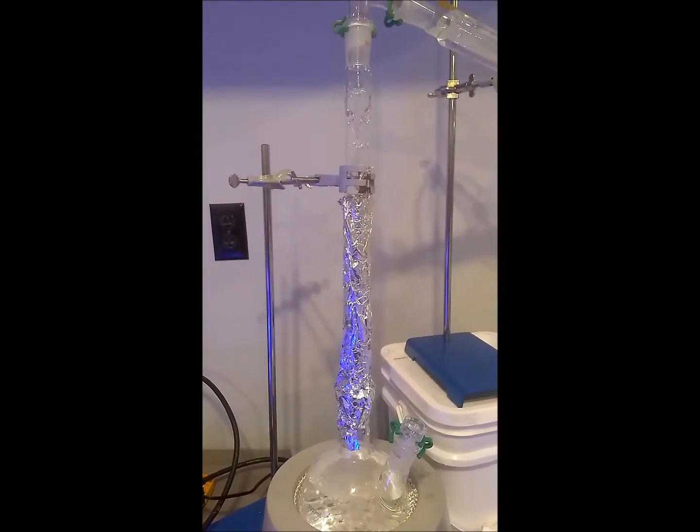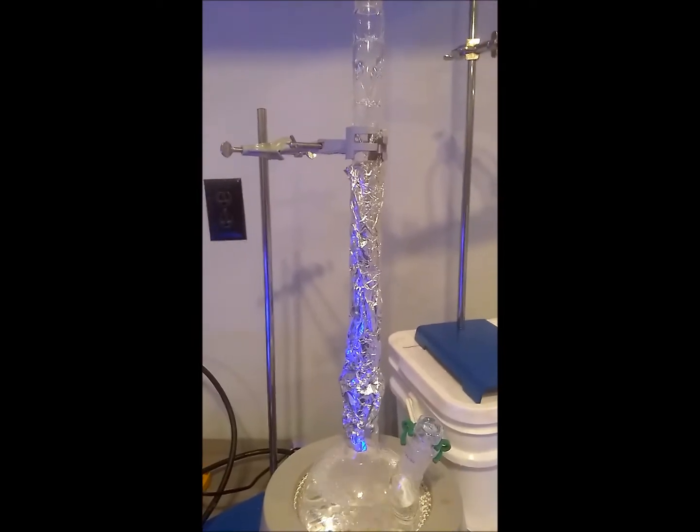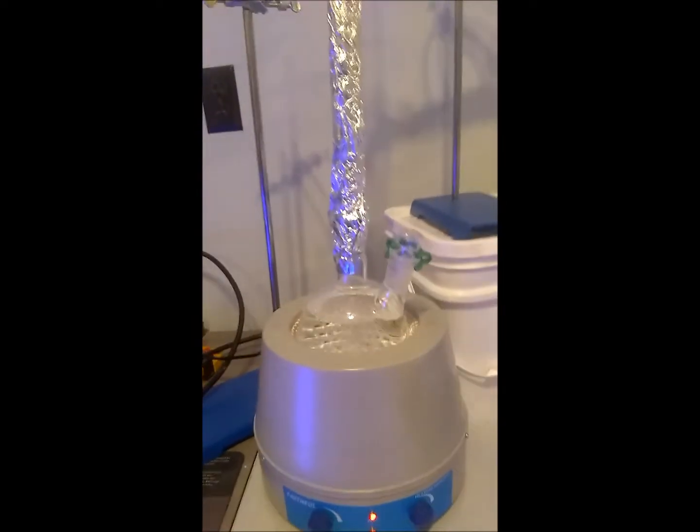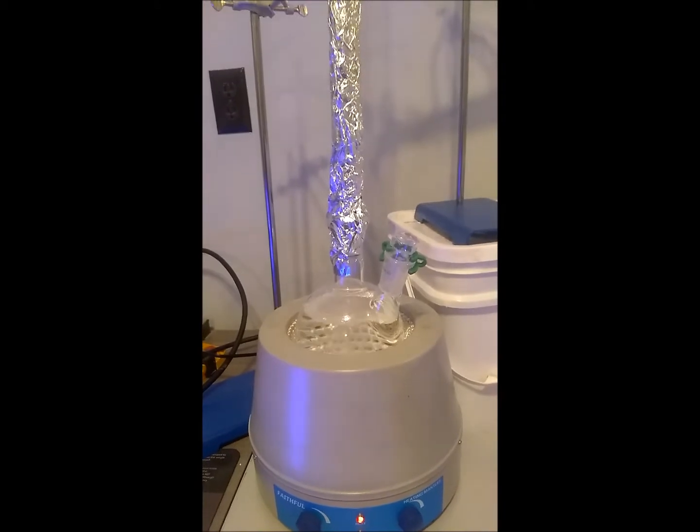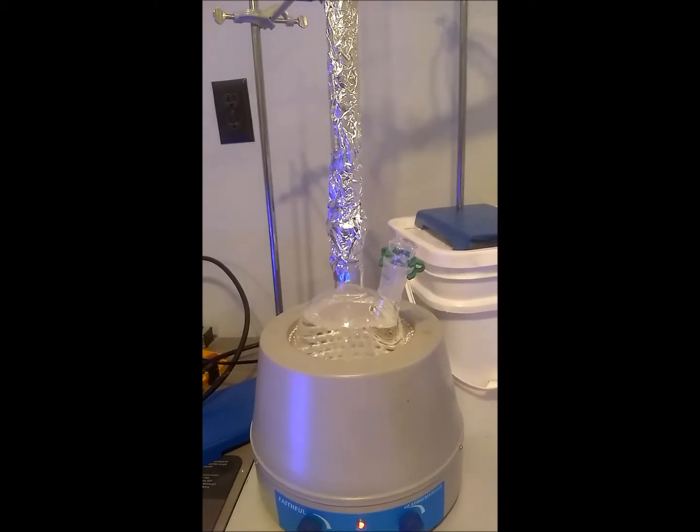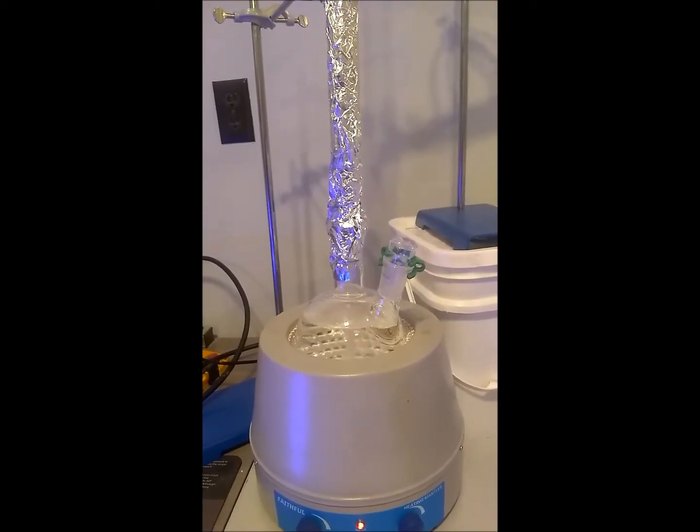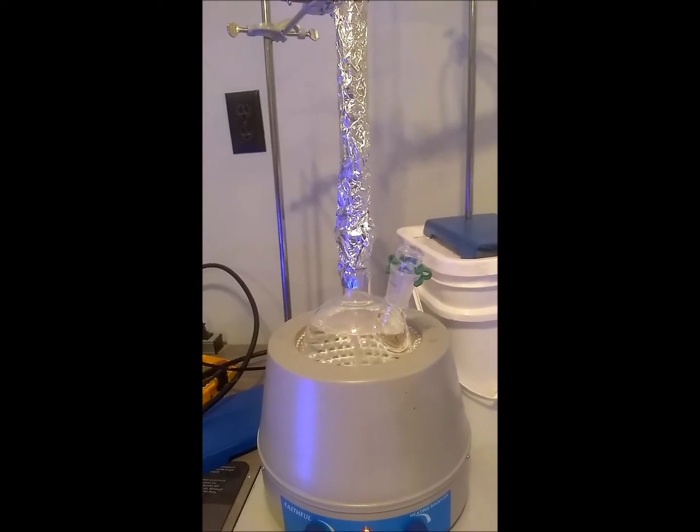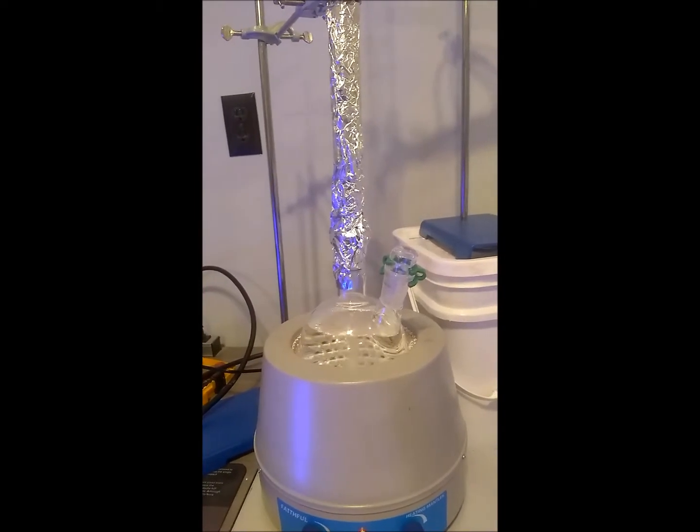And then the alcohol goes over. So the most volatile liquid is going to come over first, which is the alcohol, but it comes over as an azeotrope. The azeotrope is going to be 96% alcohol, 4% water, which is 192 proof.